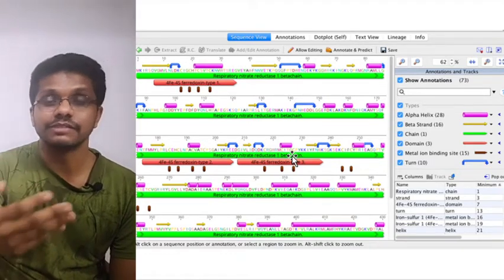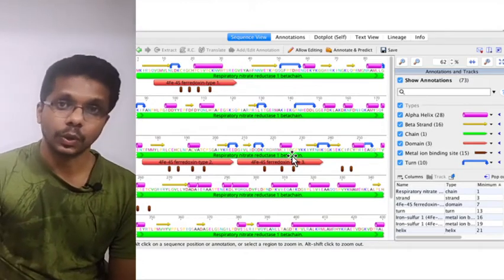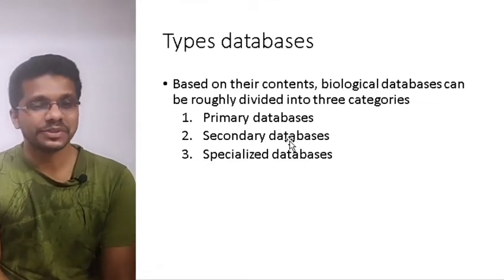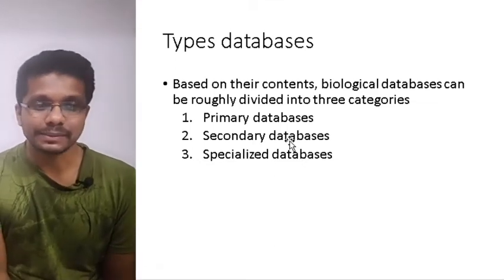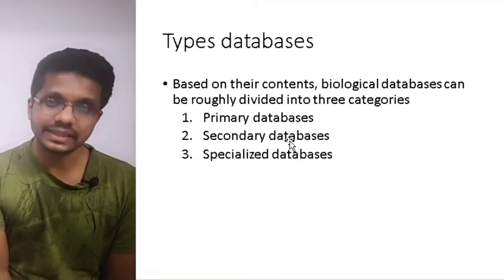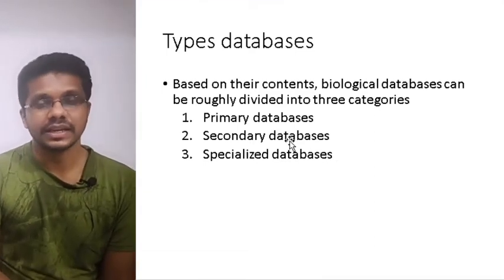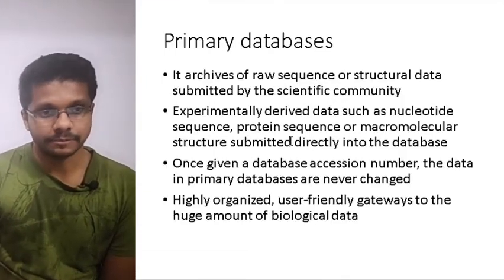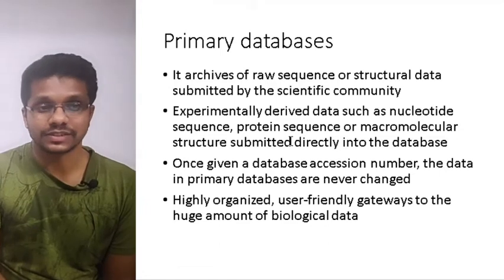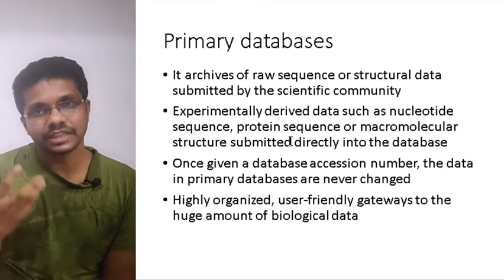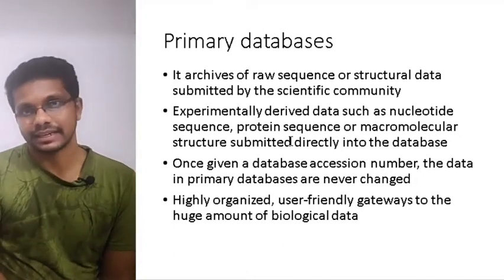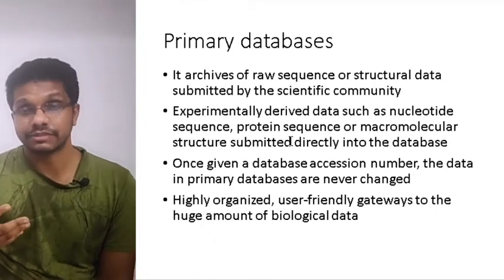Databases can be classified in many different ways. One of the most commonly used classifications is based on source: primary databases, secondary databases, and specialized databases. A primary database archives raw sequence or structural data submitted by the scientific community. It contains original data — if I am running a sequencing experiment, I can submit the raw data directly into the primary database.